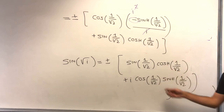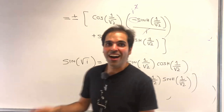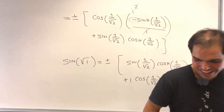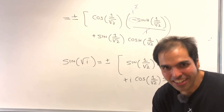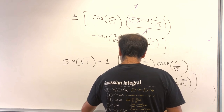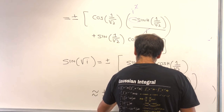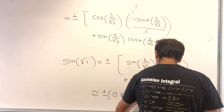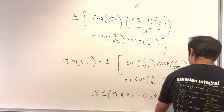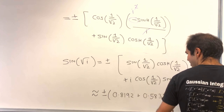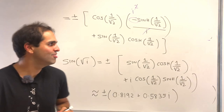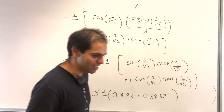Finally, we have our formula. Sine of square root of i equals ±[sin(1/√2)·cosh(1/√2) + i·cos(1/√2)·sinh(1/√2)]. Which is quite beautiful — I call it the dance of sine and cosh, and cosine and sinh. I did put this in Wolfram Alpha: you get approximately ±(0.8192 + 0.5835i). Sometimes you just have to appreciate the beauty of this.